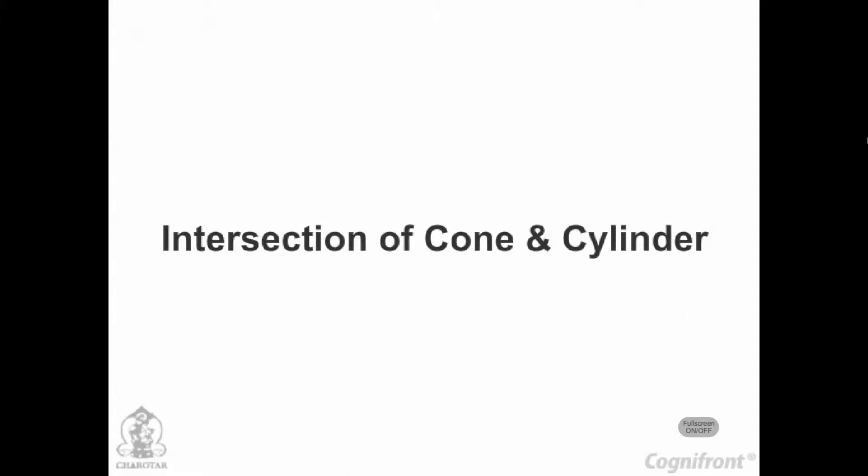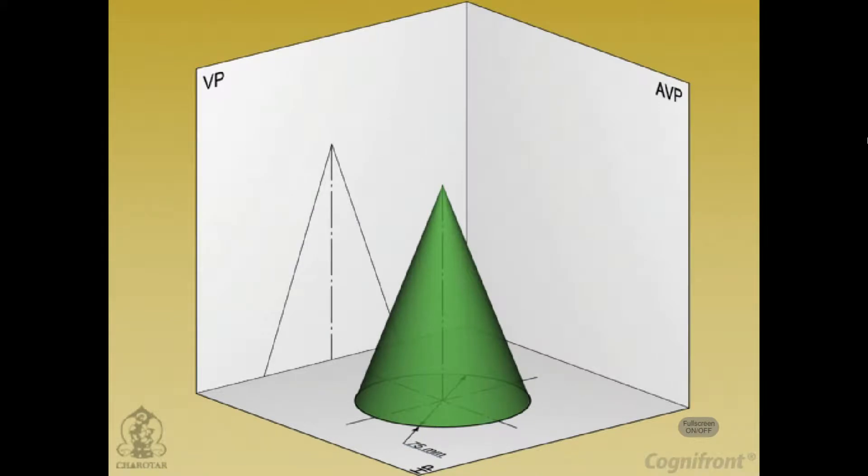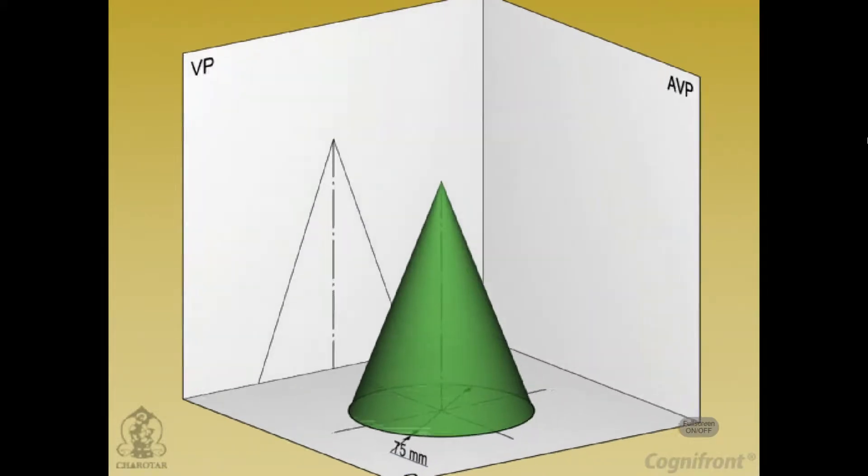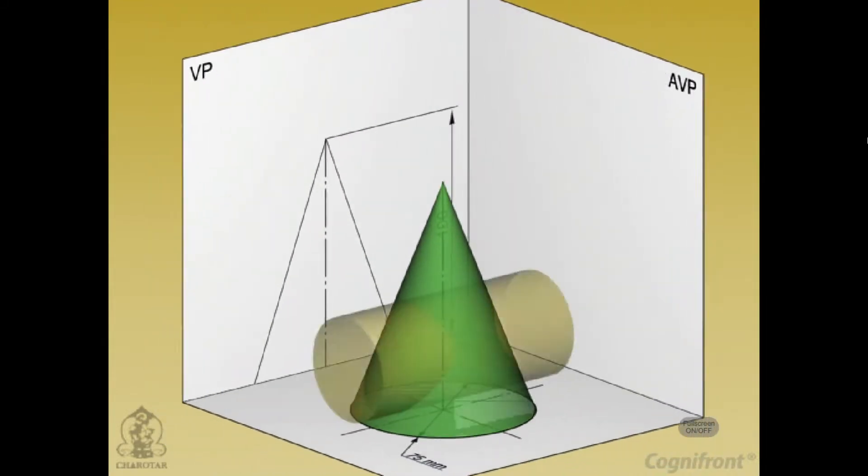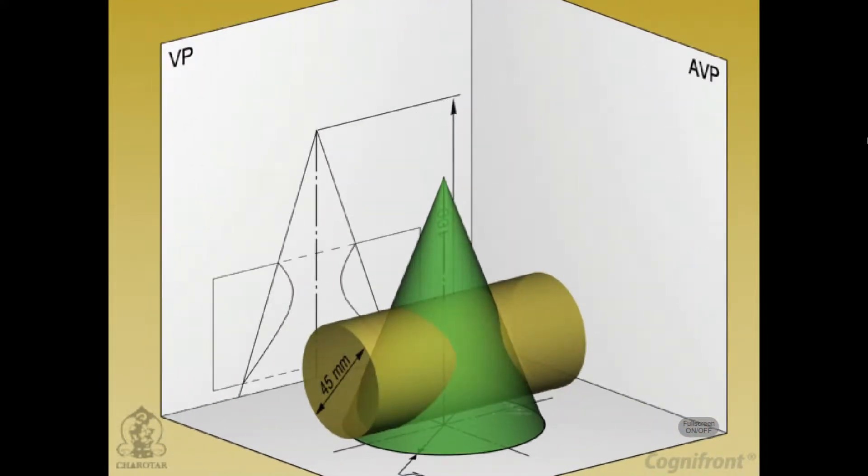Intersection of cone and cylinder. Problem 16.22: A vertical cone with a base diameter of 75 mm and axis 100 mm long is completely penetrated by a cylinder of 45 mm diameter. The axis of the cylinder is parallel to the HP and VP and intersects the axis of the cone at a point 28 mm above the base. Draw the projections of the solids showing curves of intersection.